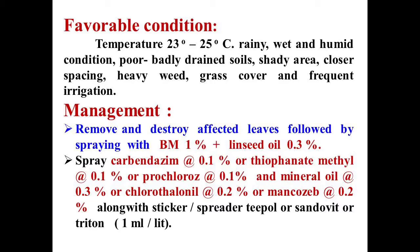For management of Sigatoka disease, remove and destroy affected leaves, followed by spraying with Bordeaux mixture 1% plus linseed oil 0.3%. After emergence of the disease on standing crop, spray with carbendazim 0.1%, thiophanate methyl, propiconazole, mineral oil, or chlorothalonil + mancozeb — these are effective fungicides reported against Sigatoka disease of banana.